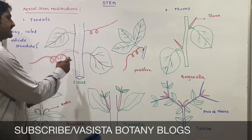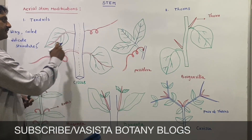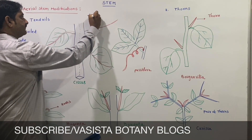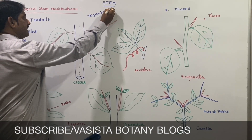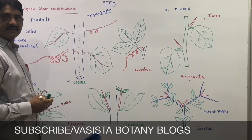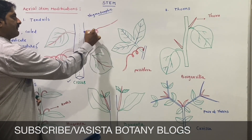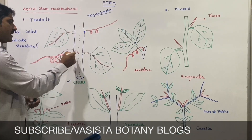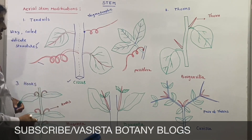Tendrils are delicate structures useful mainly for climbing. They are sensitive organs and they are useful for climbing, so they are thigmotrophic in nature. In Cissus and Vitis vinifera, the terminal bud modifies into very delicate sensitive organs. These sensitive organs are called tendrils.